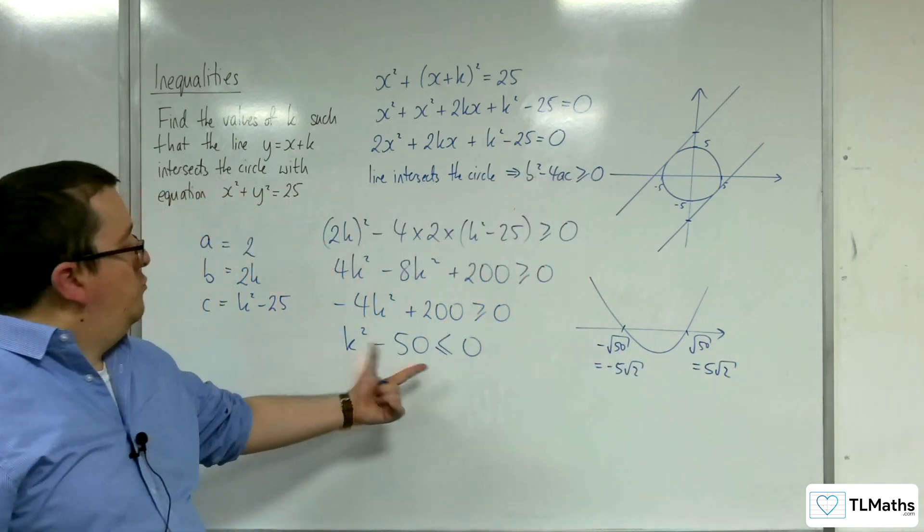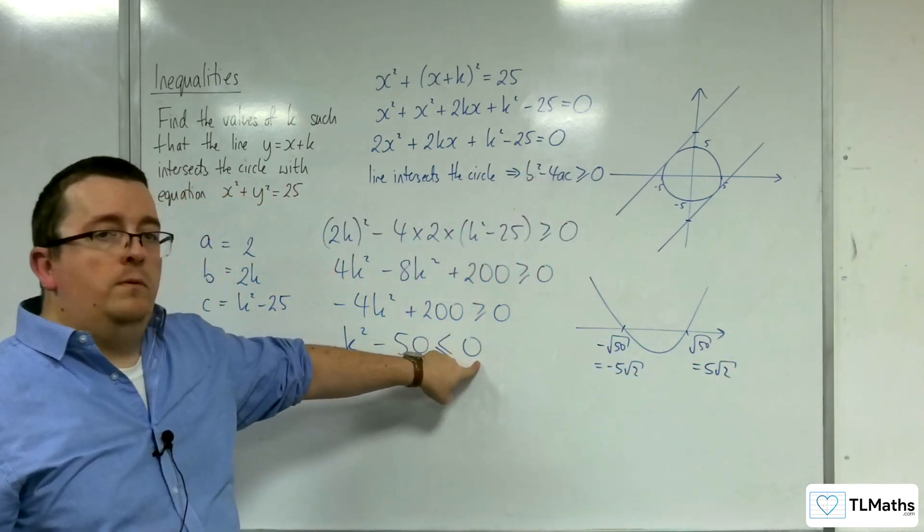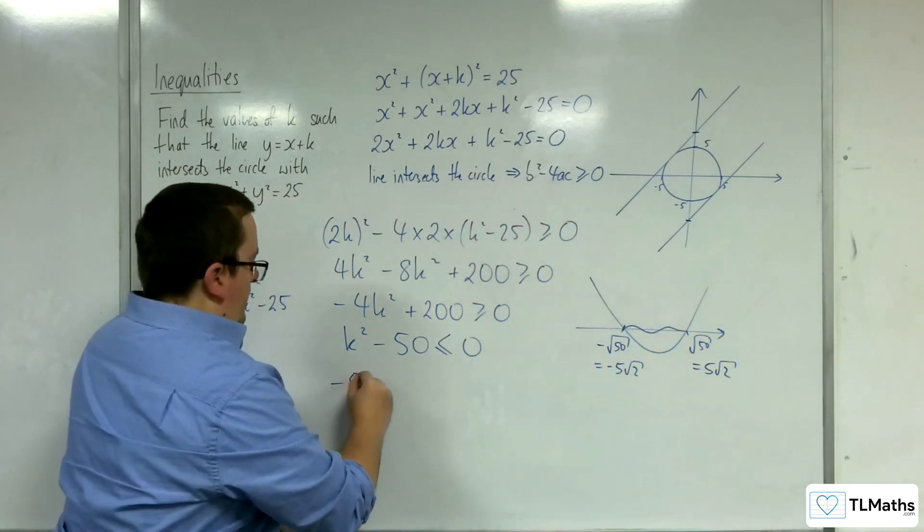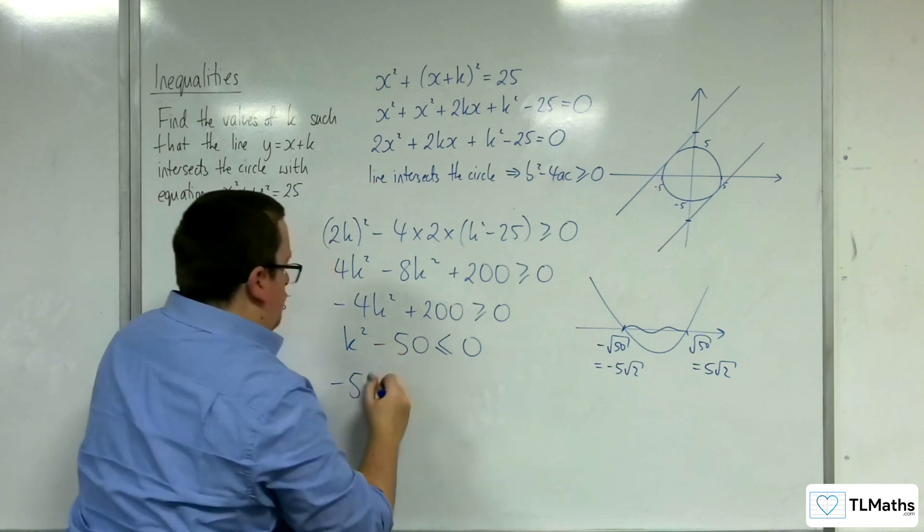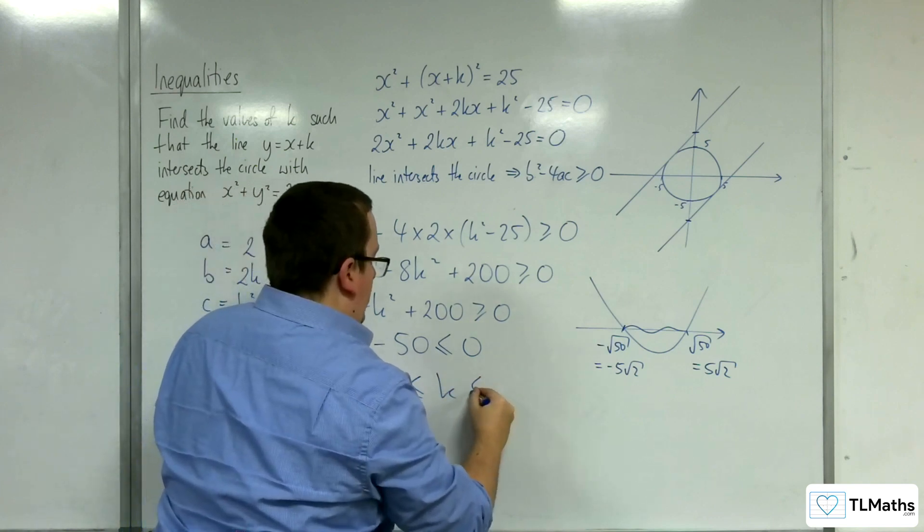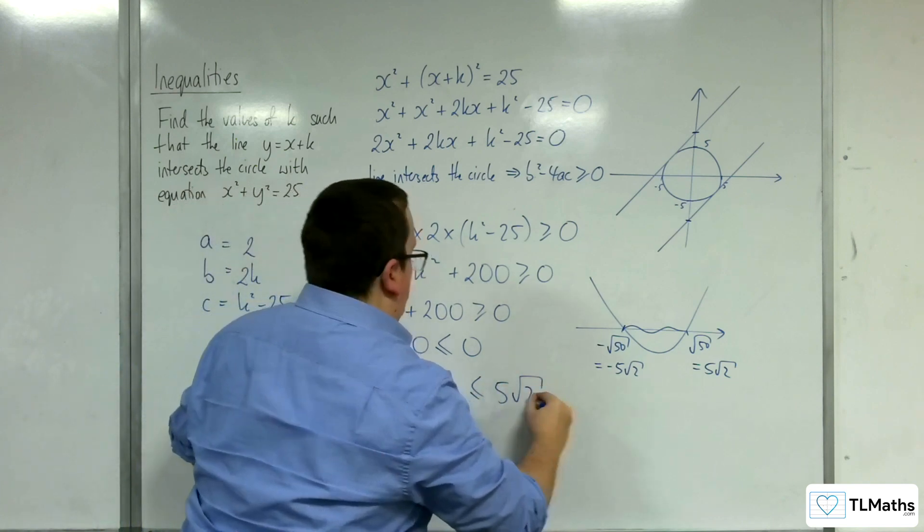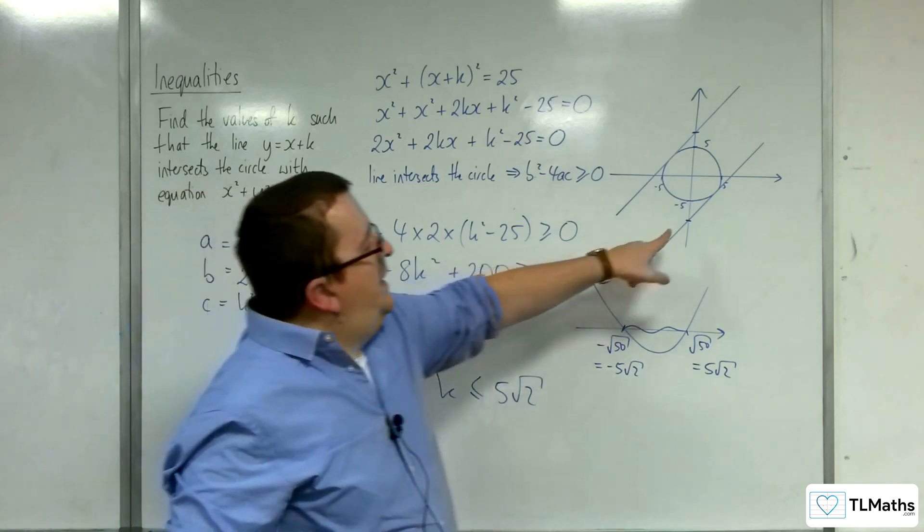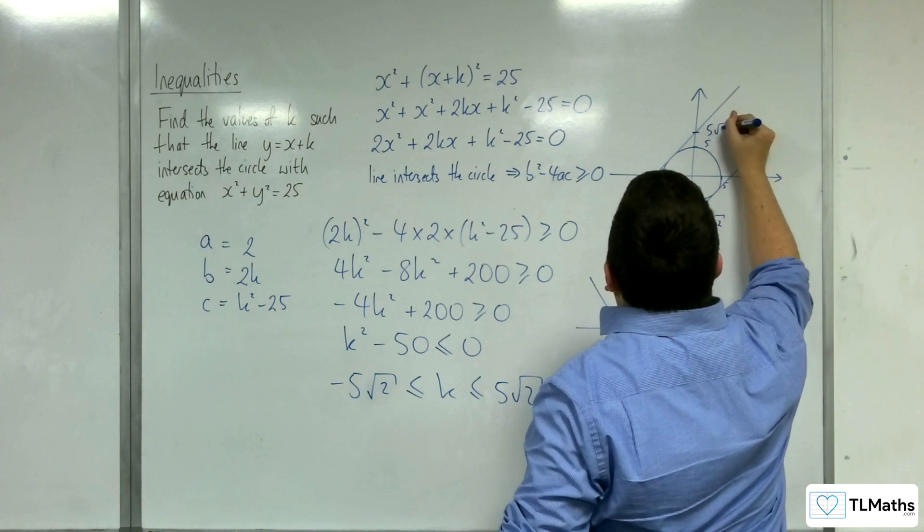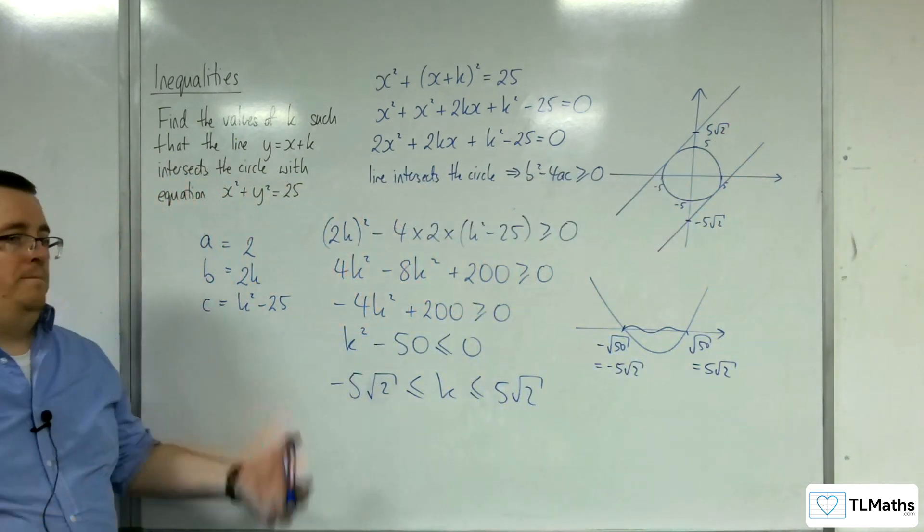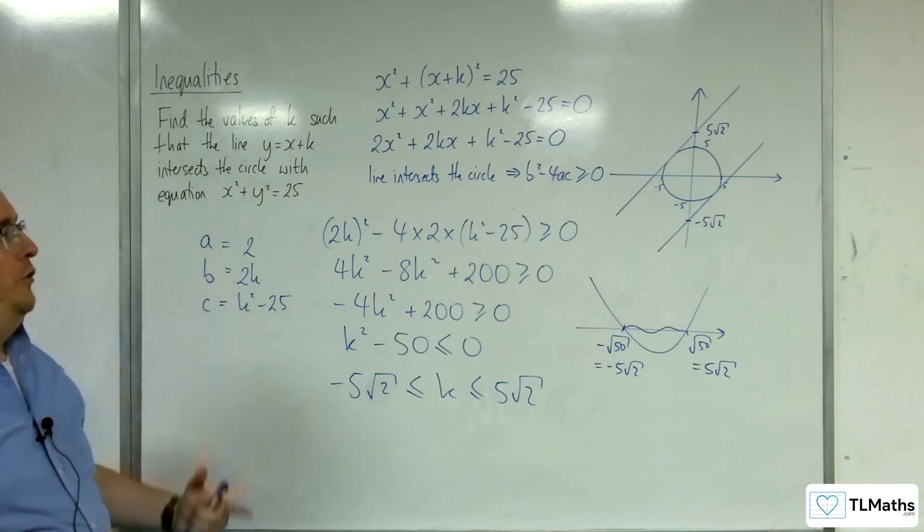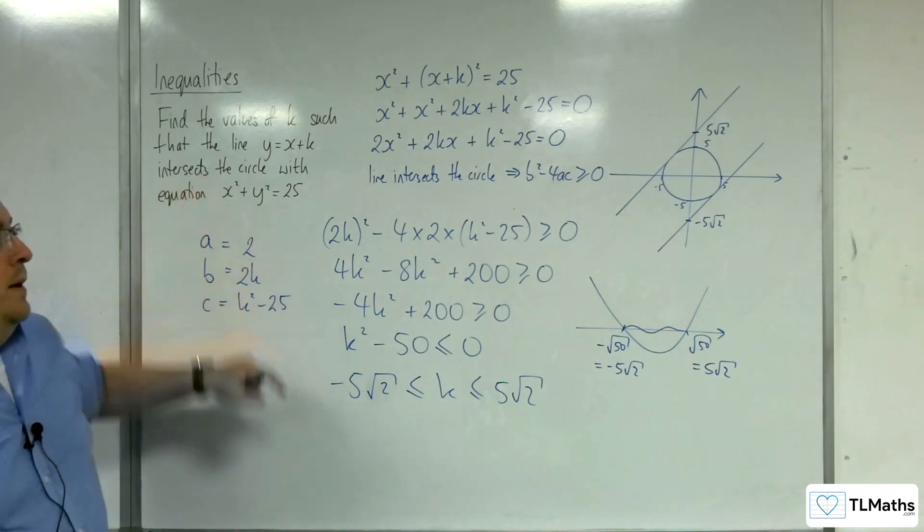And it's asking where is the graph below or equal to the x-axis? So the answer is minus 5 root 2 is less than or equal to k, which is less than or equal to 5 root 2. So these points here must be minus 5 root 2 and positive 5 root 2 on our diagram. And so that's how we can use everything that we've learnt so far in order to solve this complicated problem.